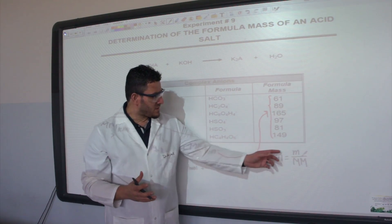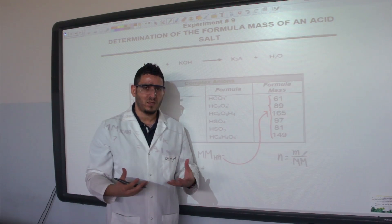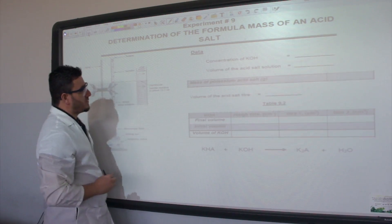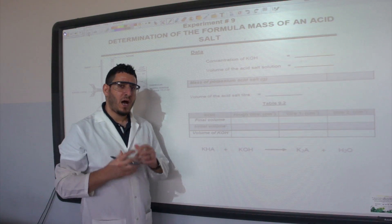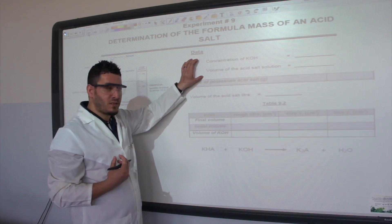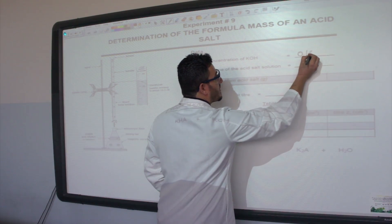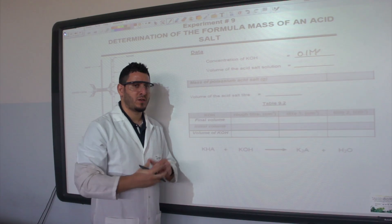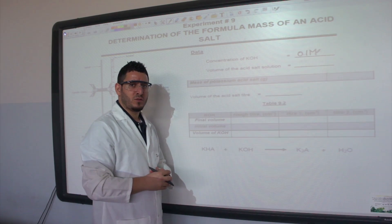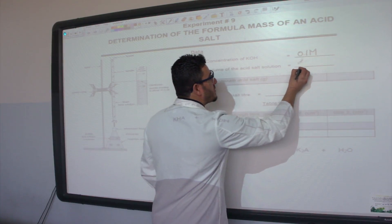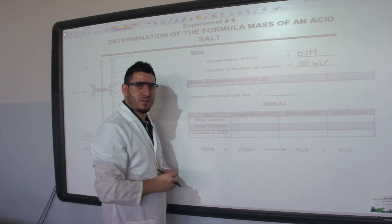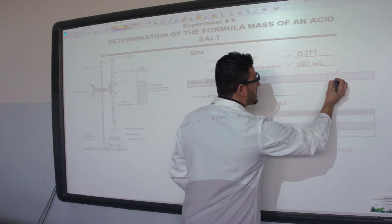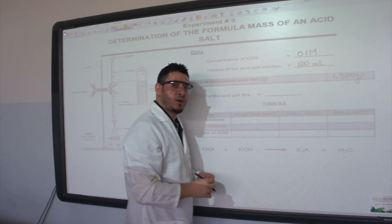The relationship between molar mass and number of moles is: n = mass / molar mass. In the lab, it's easy to determine the mass since I can weigh it. To determine the number of moles, we proceed by titration. I will use a potassium hydroxide solution at 0.1 mol/L. The acid salt solution will be prepared in a 100 mL volumetric flask, and I will weigh a mass of around 1.5 grams.